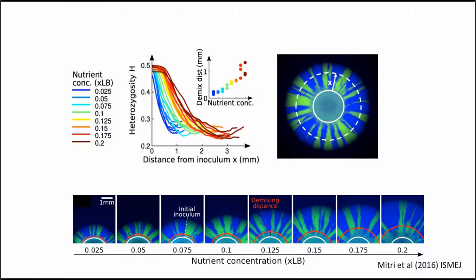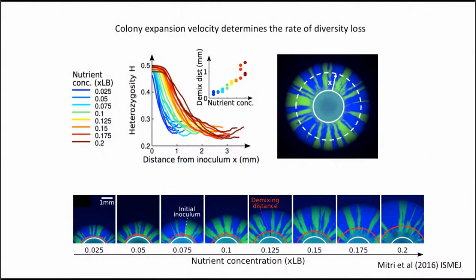At high nutrient concentrations there was initially a flat part, so diversity or mixing remained for longer before being lost, and then the curve was less steep afterwards. We defined a term called the demixing distance — the point at which the colony had segregated into its different sectors — taken as the maximum slope of these lines. We then plotted the demixing distance against nutrient concentration and found a nice linear relationship. After fitting many physical models, we found the main explanatory variable was colony expansion velocity — how fast your colony is growing.